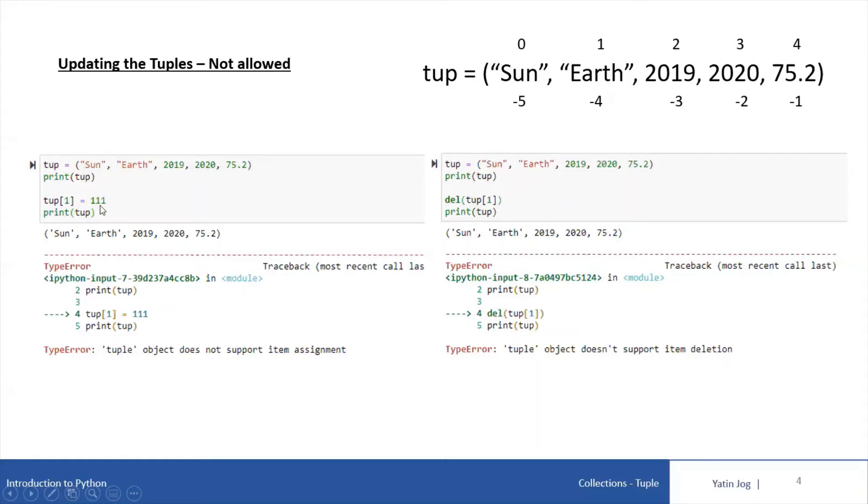So now we are trying to modify, update the element which is present at first index. The current value is earth string format which I am trying to update to 111, an integer value. And then I am trying to print the tuple value.